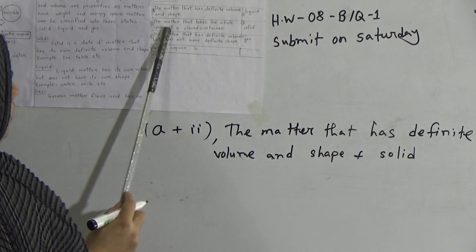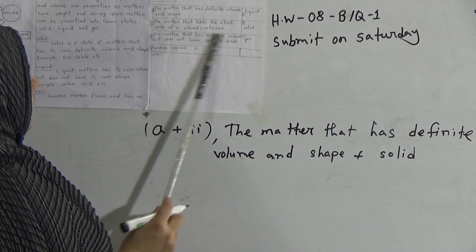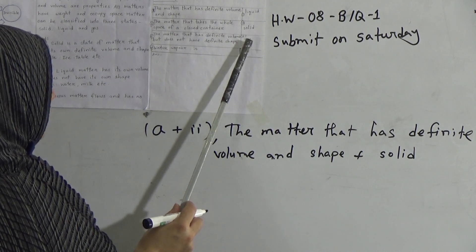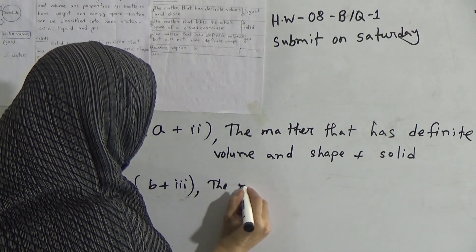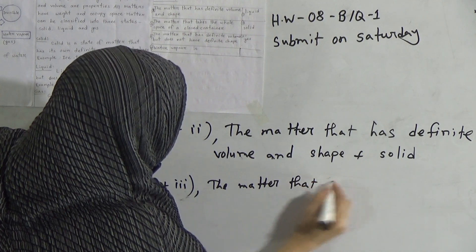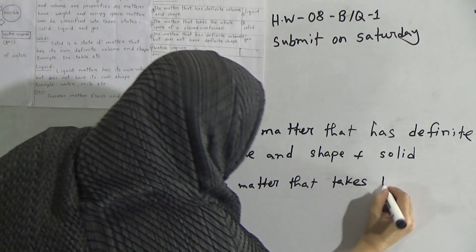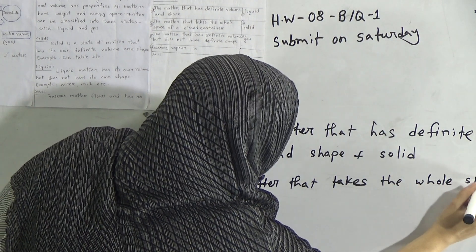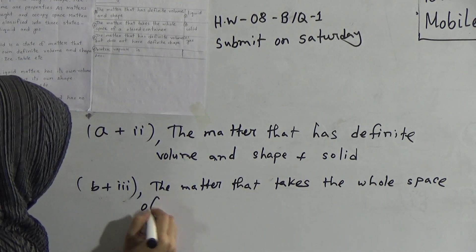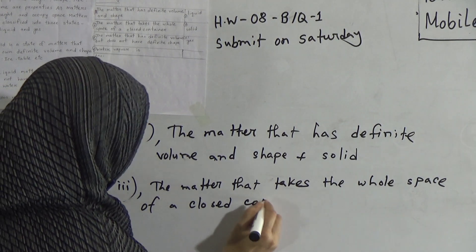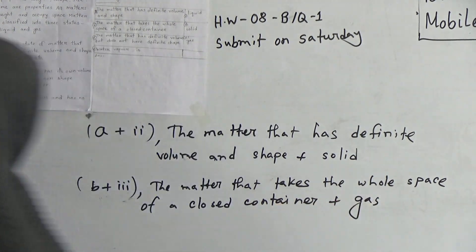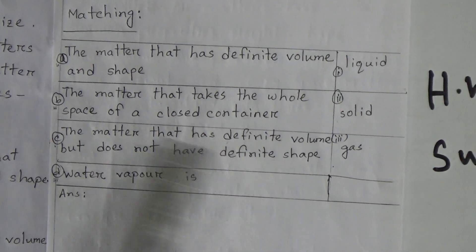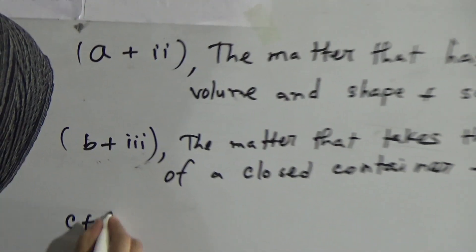Answer B — the matter that takes the whole space of a closed container is gas. So write B plus three: the matter that takes the whole space of a closed container plus number three, gas. Answer C — the matter that has definite volume but does not have definite shape is liquid. So write C plus one.